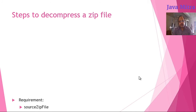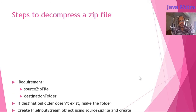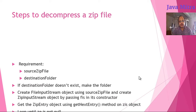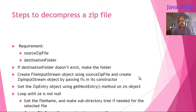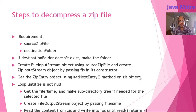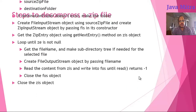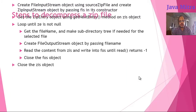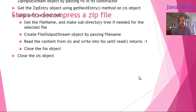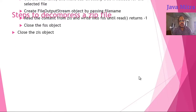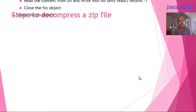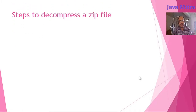The first requirement is the source file and the destination folder. If the destination folder doesn't exist, we have to make the folder. Then we create a FileInputStream object using the source zip file, create a ZipInputStream object, get the ZipEntry object, and if the zip entry is not null we loop and write the content into a FileOutputStream object.